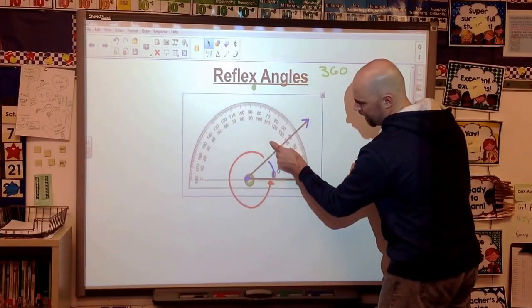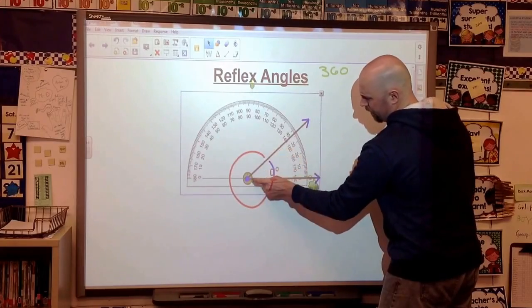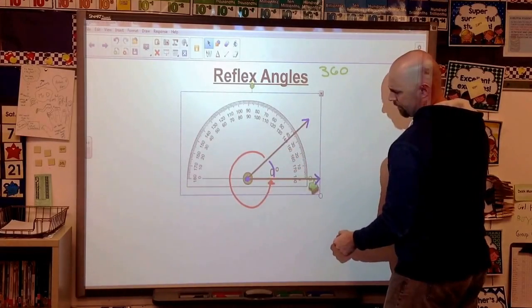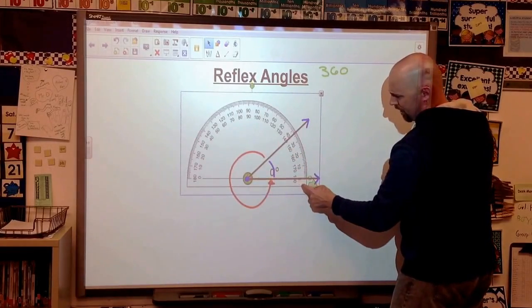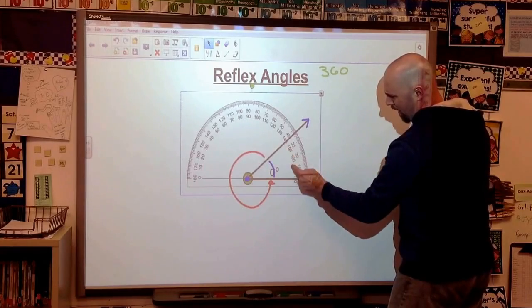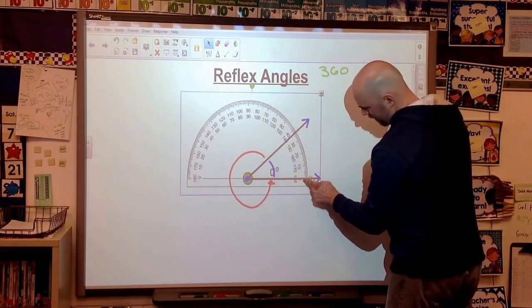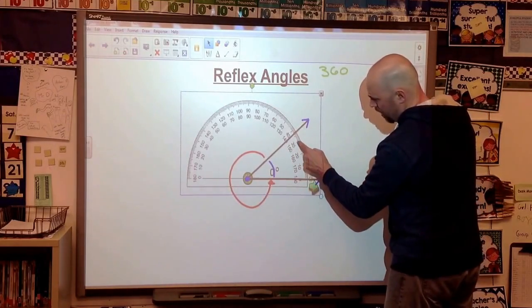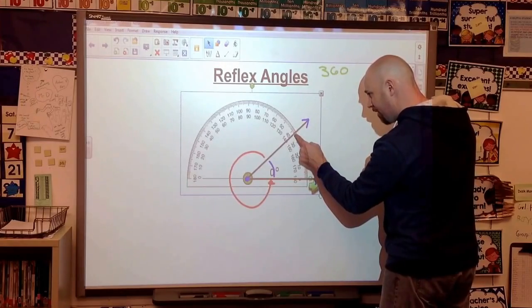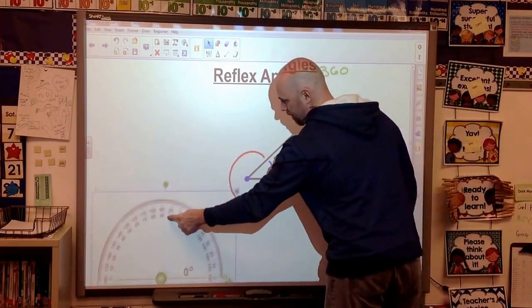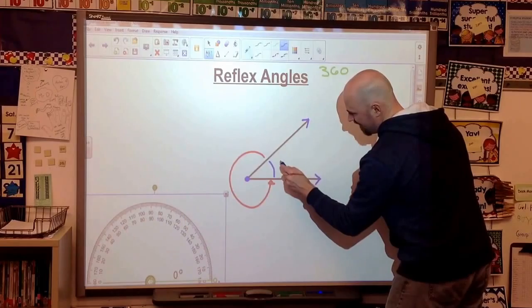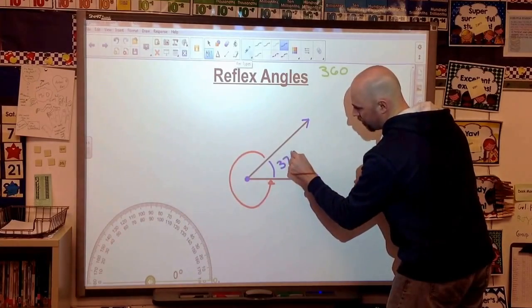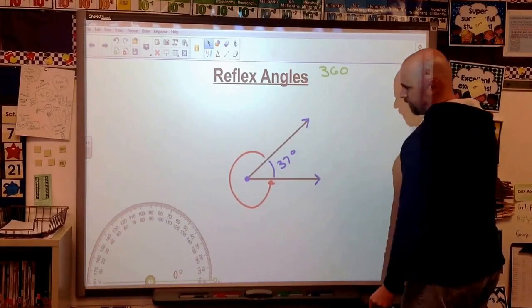So we're going to line that up, our center point and our vertex. We're going to line up that baseline. And now we're going to look and see how wide this thing ends up being here. So 0, 10, 20, 30, 35, 36. This looks like our blue piece here on the inside. This is a 37 degree angle.